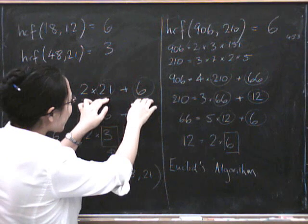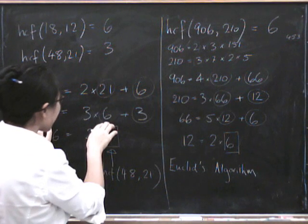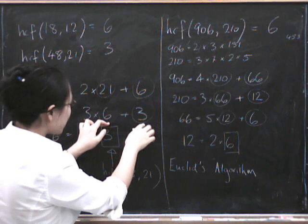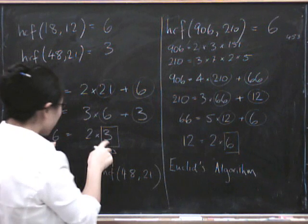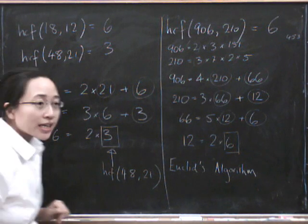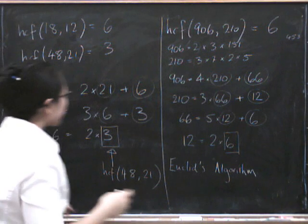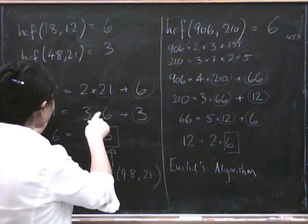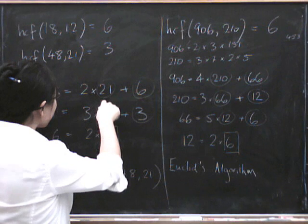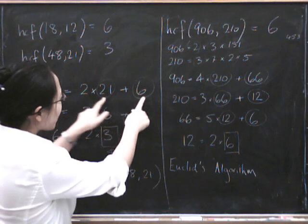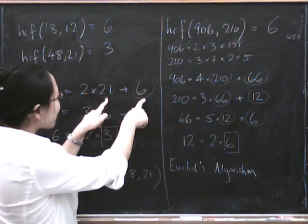So I then did it like this and I said how many times did 21 go into 48 and I found the remainder, and then I did it again for 21 and 6, and then I did the remainder thing again, and then I did the process for 6 and 3. Basically the whole idea is that the highest common factor of these two numbers is the highest common factor of those two numbers. It's the same thing.